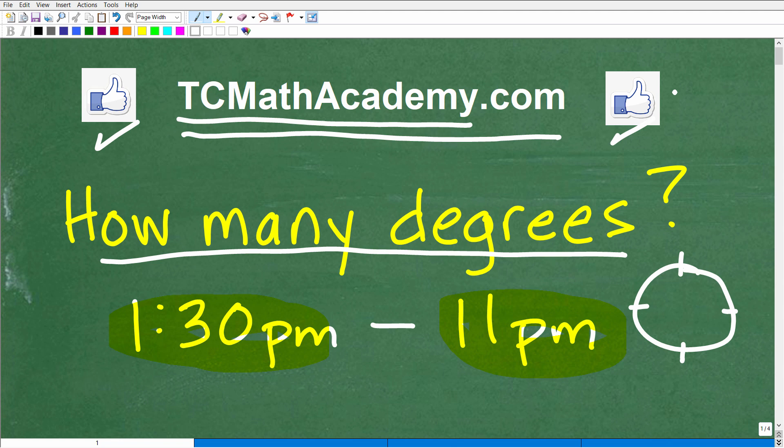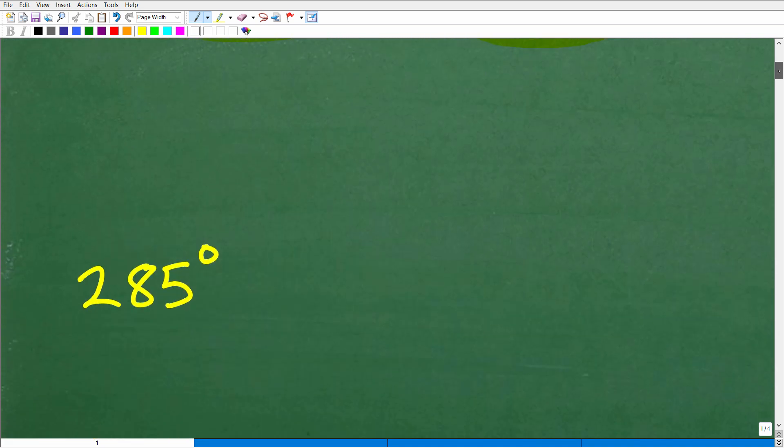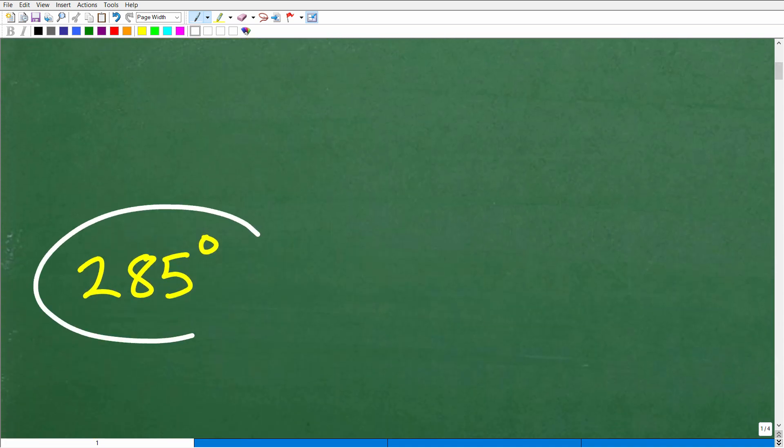Okay, so how many degrees between 1:30 PM and 11 PM? Of course, our answer is going to be in degrees. So let's go and take a look at the answer right now. It is 285 degrees.